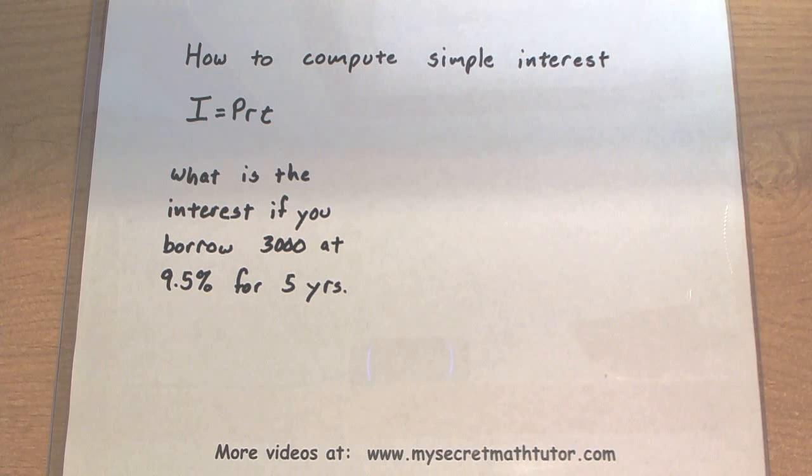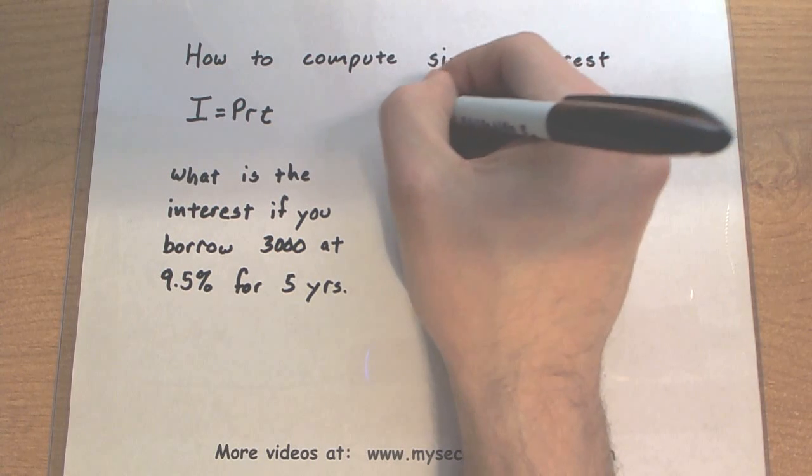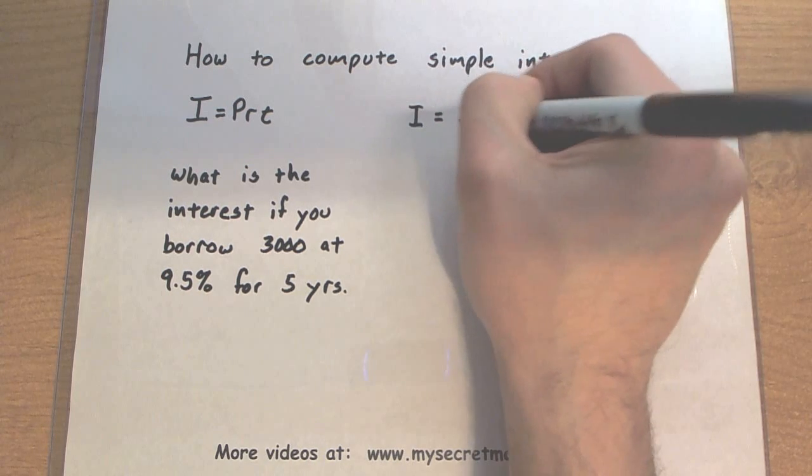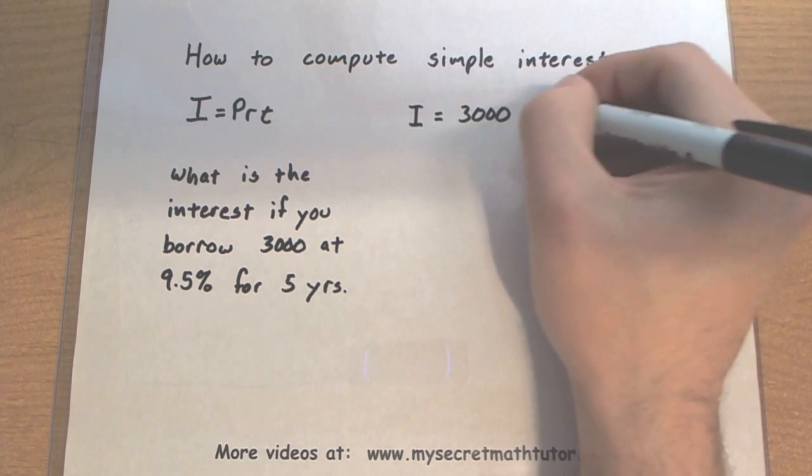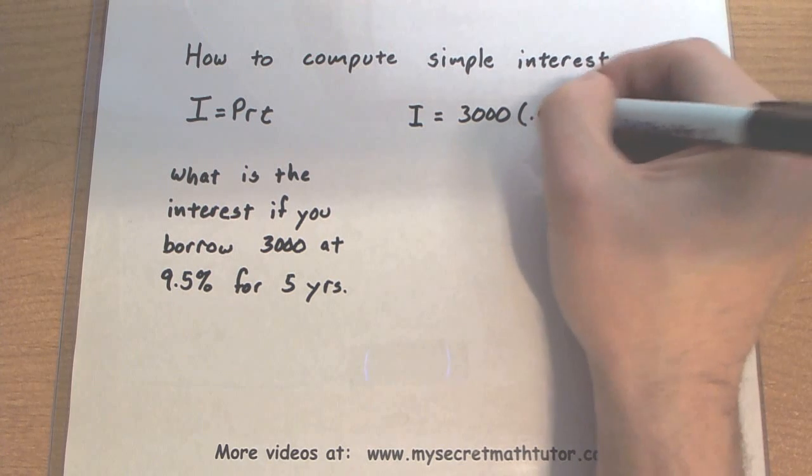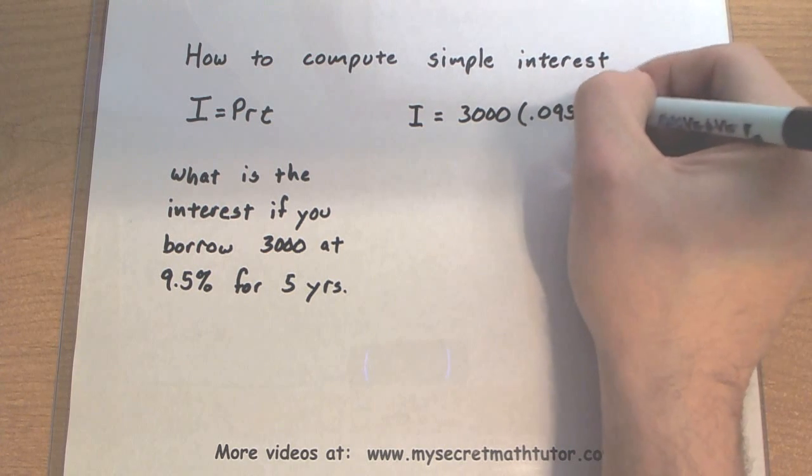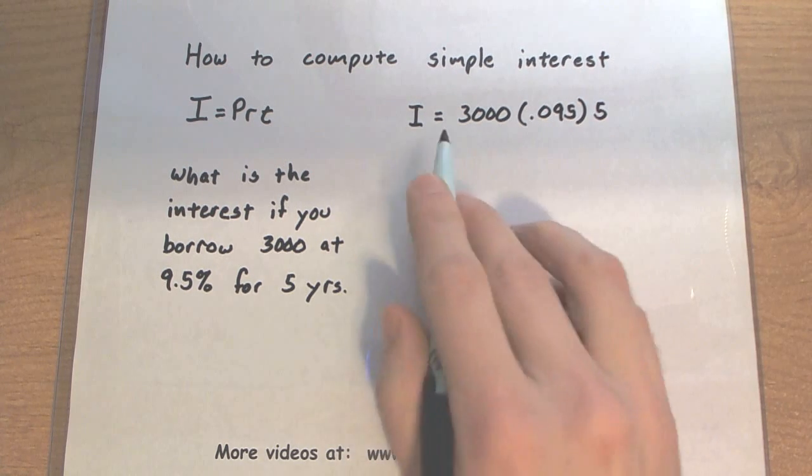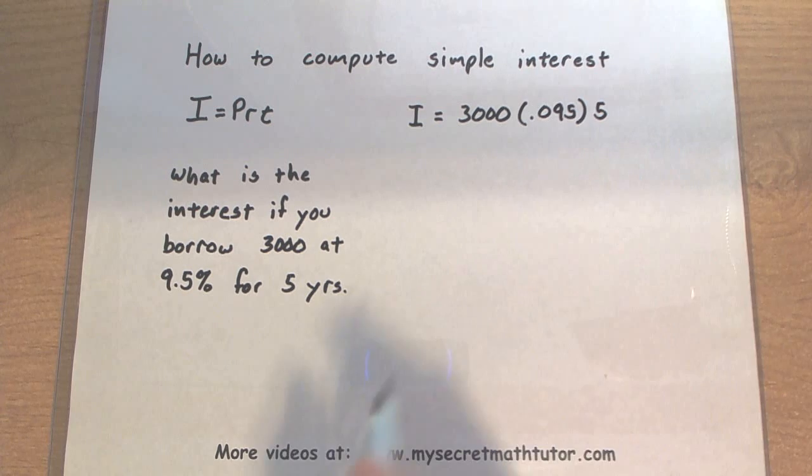So let's go ahead and put in our pieces and see what happens. I want to know what is my interest. My principal is the $3,000 multiplied by the rate, and make sure you put this as a decimal. We're going to borrow this money for five years. So $3,000 times .095 times 5.